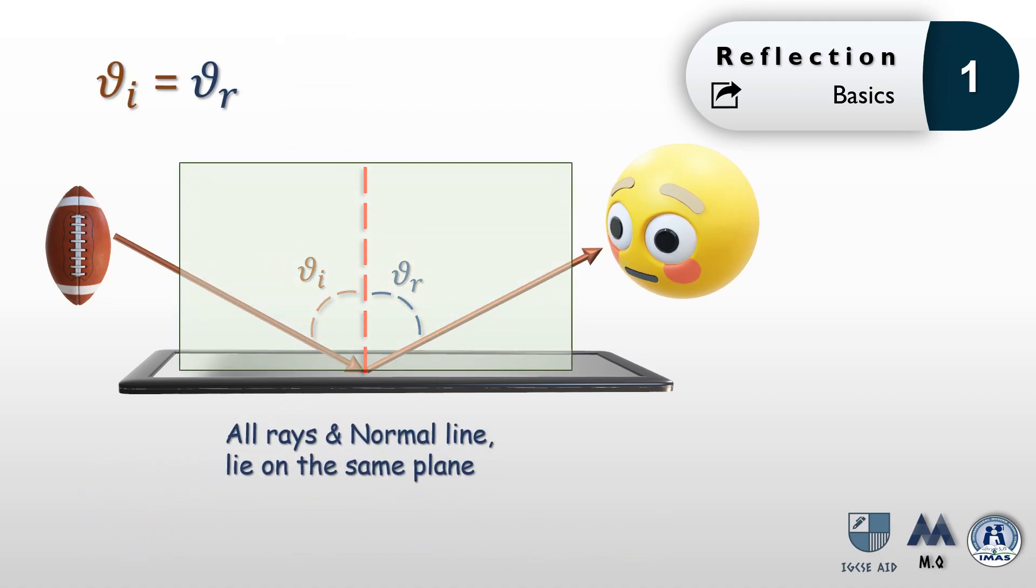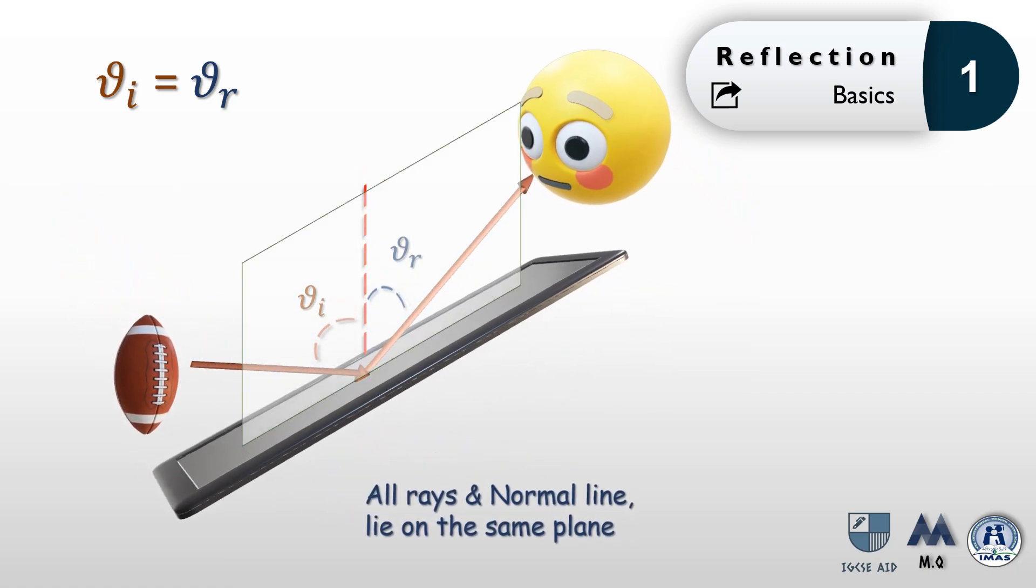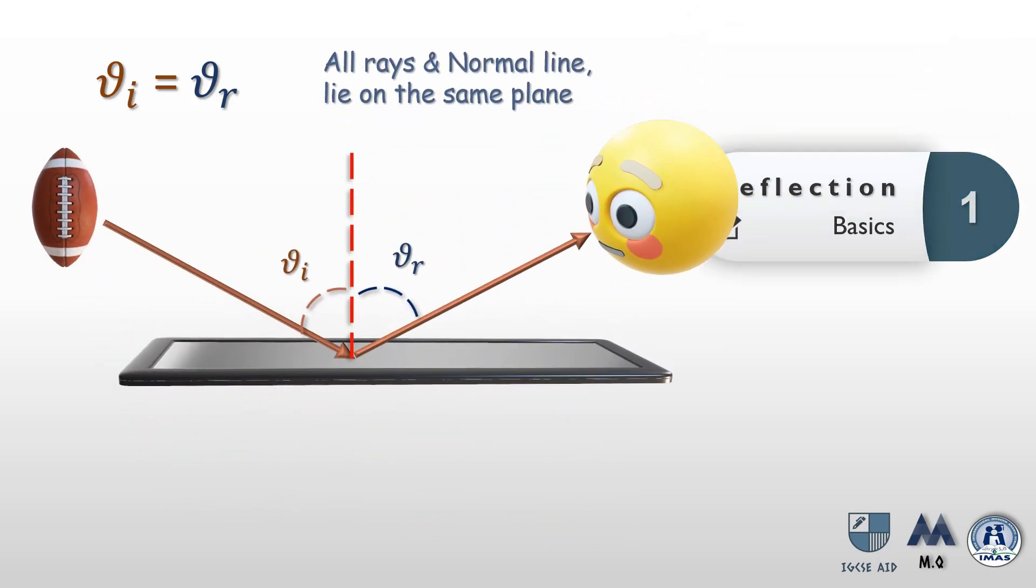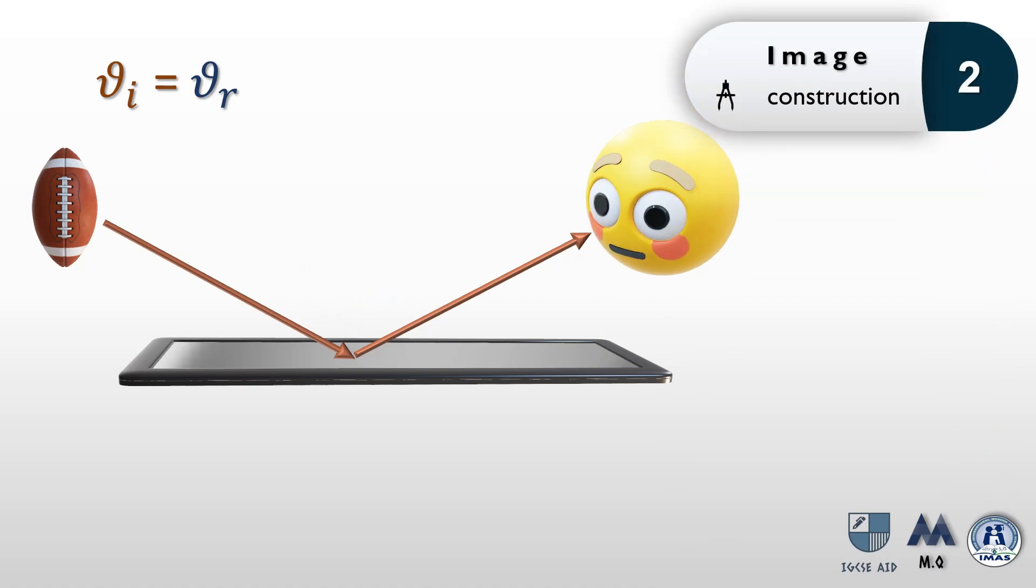Another thing you need to know about reflection is that all the rays and the normal line lie on the same plane, demonstrated over here. The basics of reflection can be used to construct the image position and location behind the mirror.